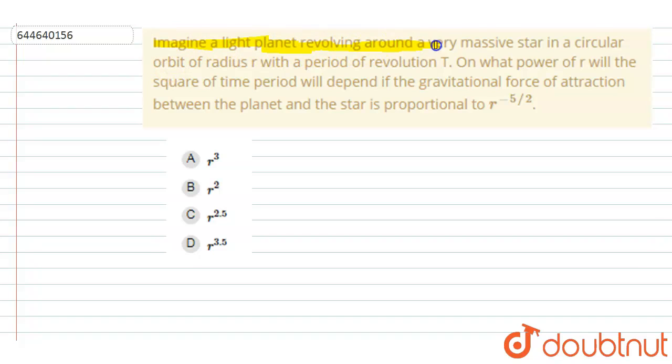revolving around a very massive star in a circular orbit of radius r with a period of revolution T. On what power of r will the square of time period depend if the gravitational force of attraction between the planet and the star is proportional to r to the power minus five by two?